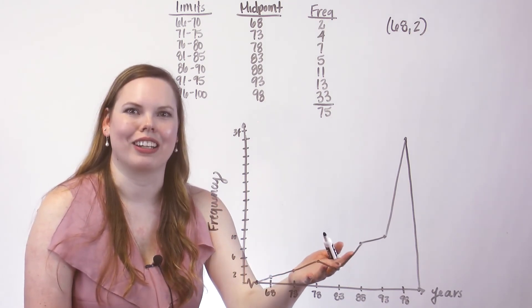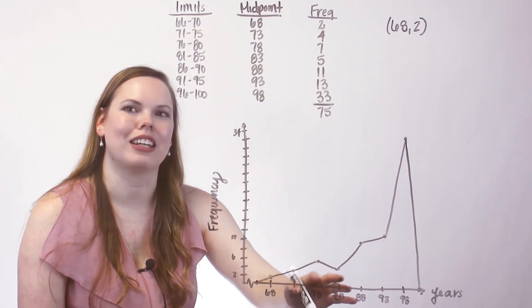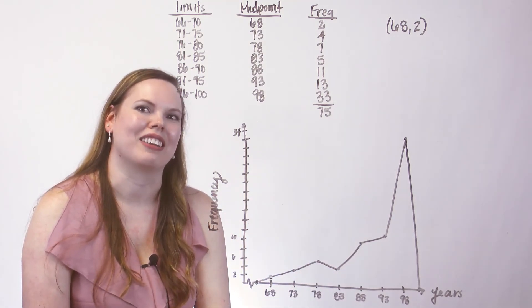I really like the polygon because you can really see the shape of the graph. And so this one is clearly skewed to the left when you draw it out like this.